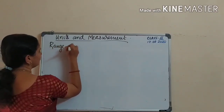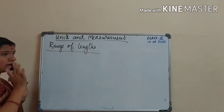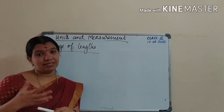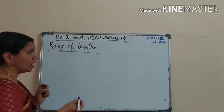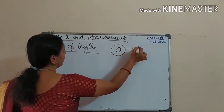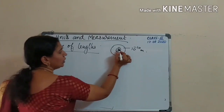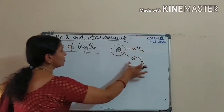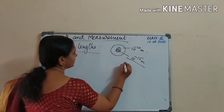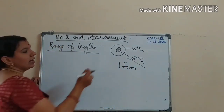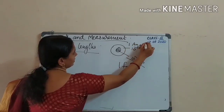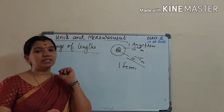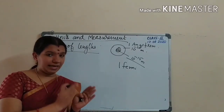Now we discuss the range of lengths. We have to measure both small and large lengths. The size of an atom is of the order of 10⁻¹⁰ meters, and a nucleus is in the range of 10⁻¹⁵ meters. The unit 10⁻¹⁵ meter is called 1 Fermi, and 10⁻¹⁰ meter is called 1 angstrom.